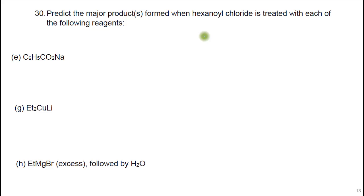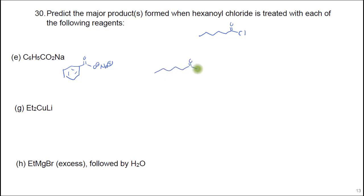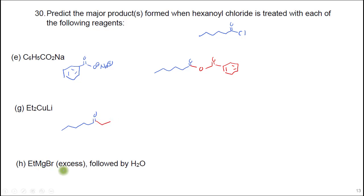Here we're looking at products with hexanoyl chloride with each of the reagents. The first would make an anhydride. With the cuprate, we're just going to add one of the ethyl groups, which makes a ketone. But if you had excess Grignard, that's going to make the alcohol — you add two ethyl groups and then protonate the alcohol.